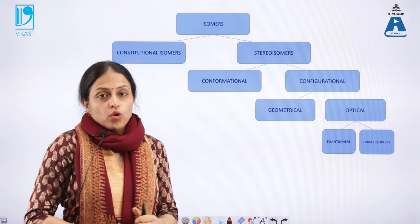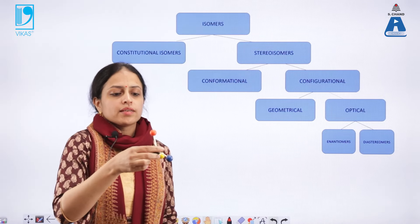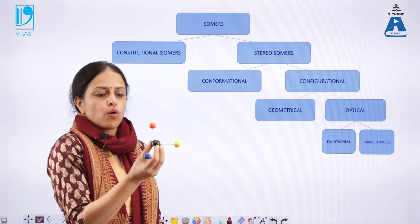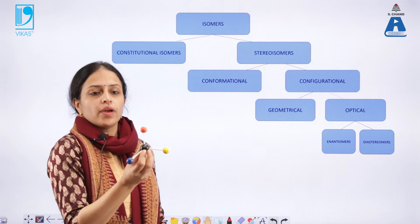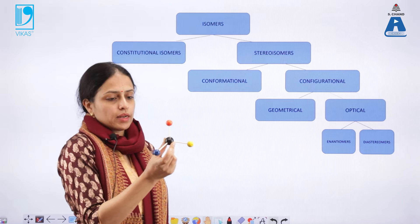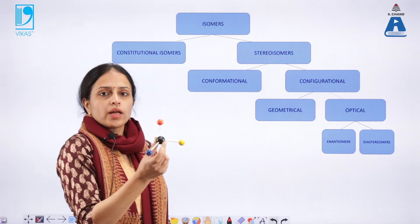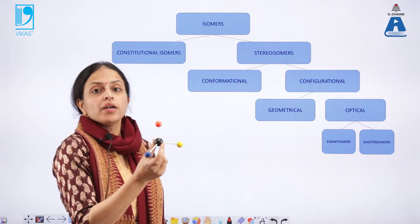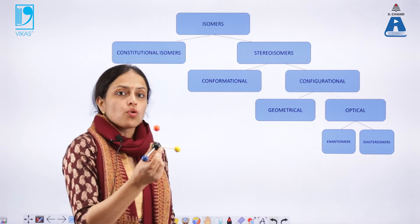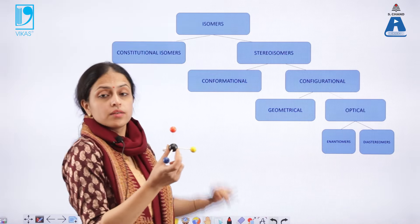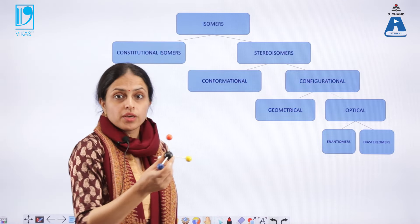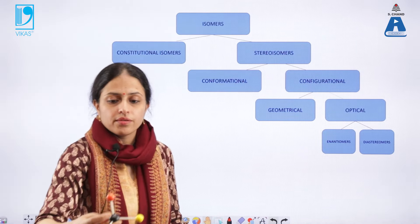For example, look at this 3D representation of a molecule which has a tetrahedral shape. The center one is the blue atom, which is the carbon. The other ones could be anything, but all of them are different. This molecule is expected to show stereoisomerism, which we will be talking about later in this lecture.